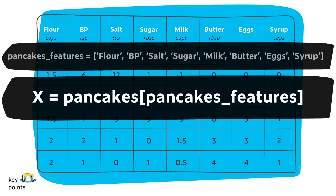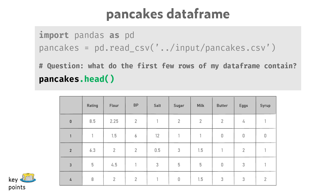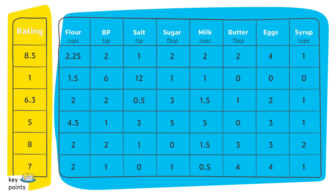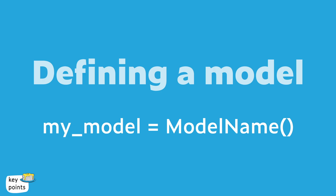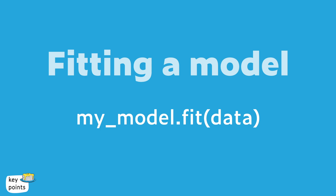The second chunk of code will be where we create capital X, which is the subset of our pancakes data frame that only contains our features. To get X, we run X equals pancakes, and then in square brackets, pancakes_features. If we want to make sure that capital X contains all of our features, we can use pandas skills from our exploratory data analysis section by running head, columns, and describe. Now that we have our features and prediction target, we can build a model using scikit-learn. The basic steps are to define the model and then fit the model.